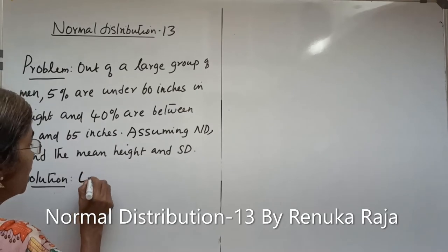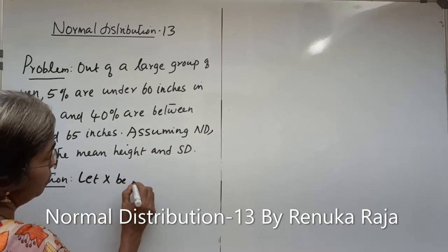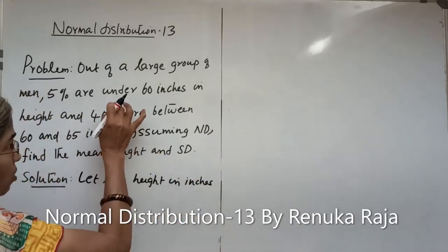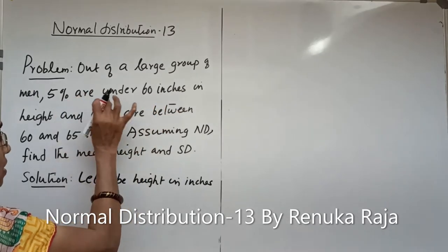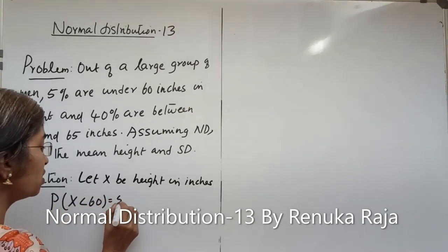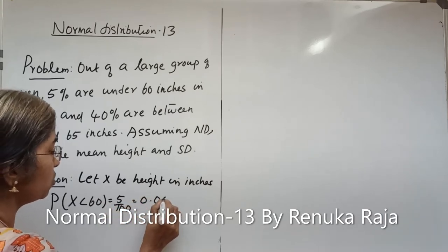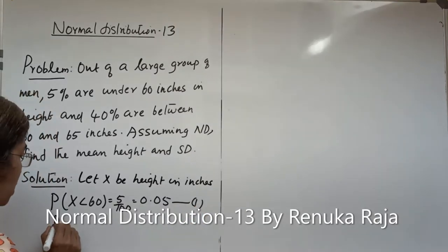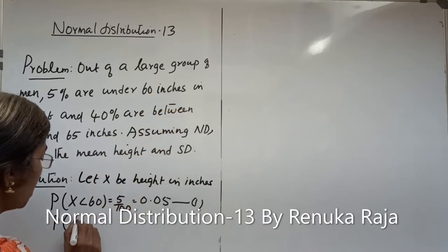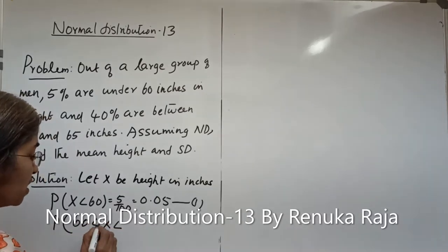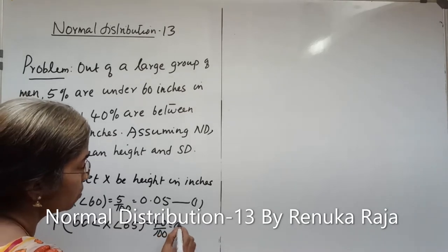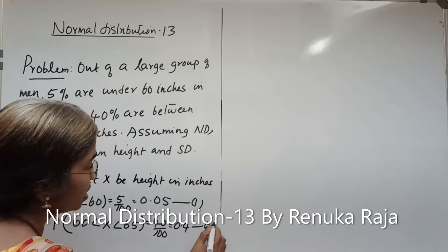Let x be the height in inches, so that we can obtain two probability statements. That is, 5% are under 60 inches means probability x less than 60 equals 0.05. Let us mark it as equation 1. And the other one: 40% are between 60 and 65 inches, that is probability 60 less than x less than 65 equals 0.40. Let us mark it as equation 2.